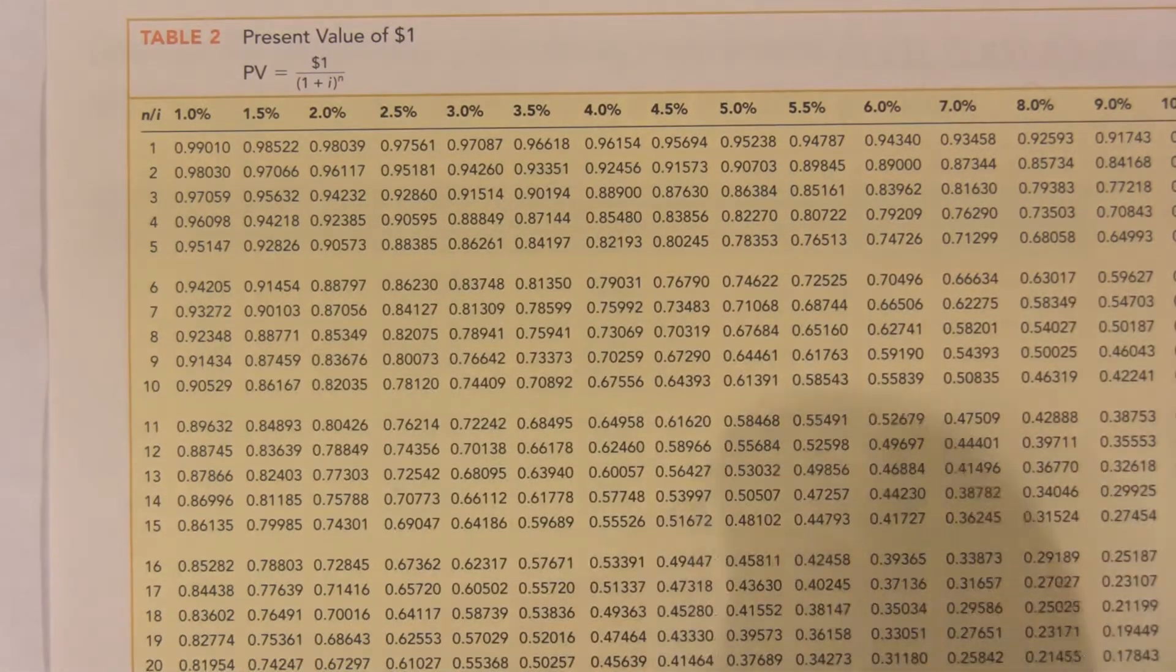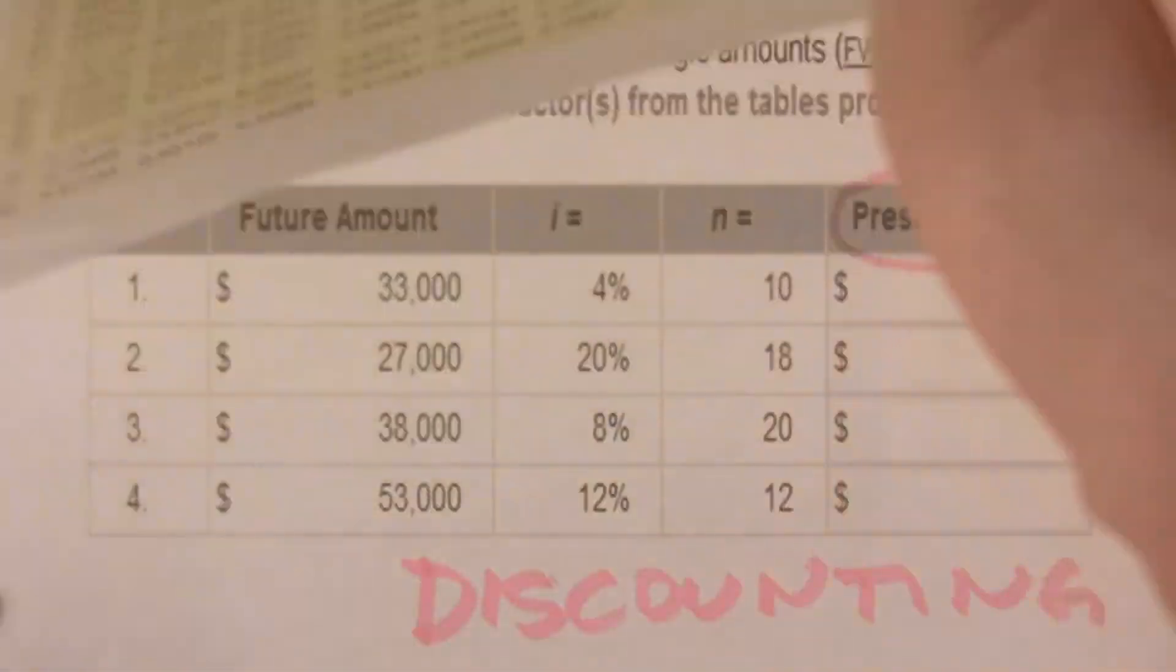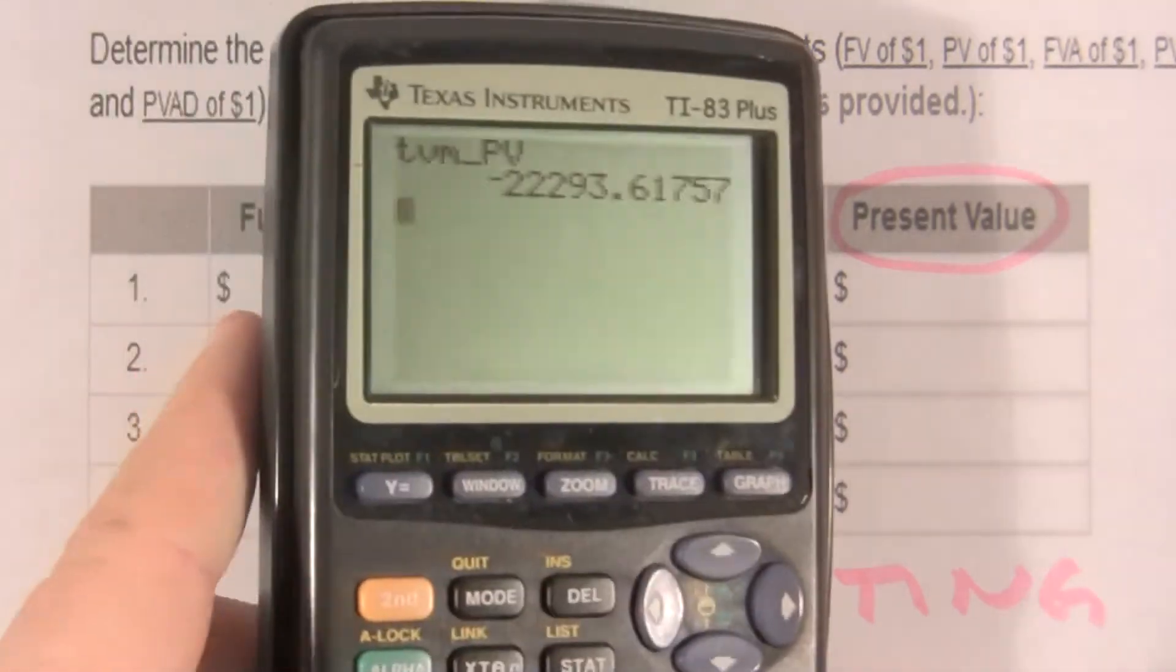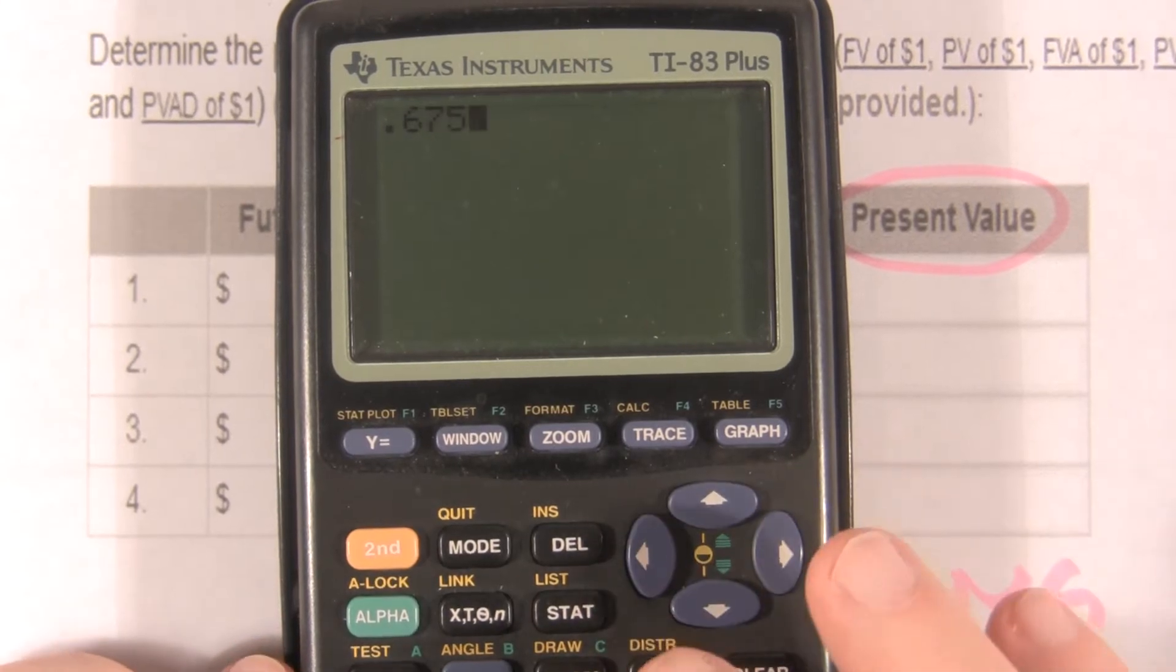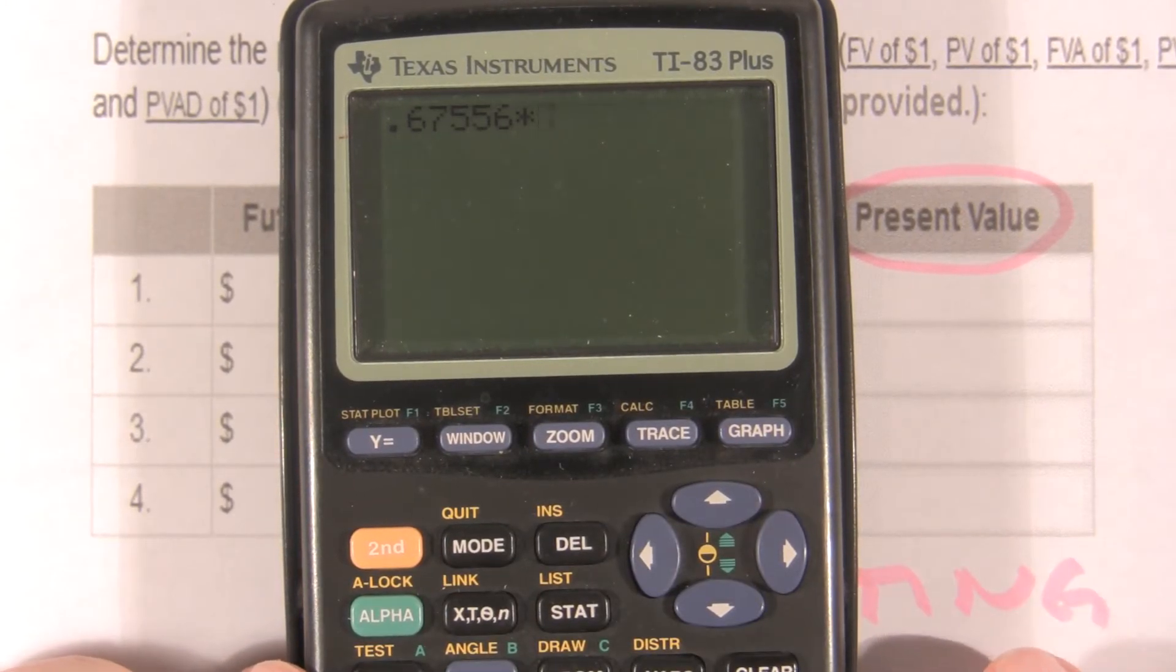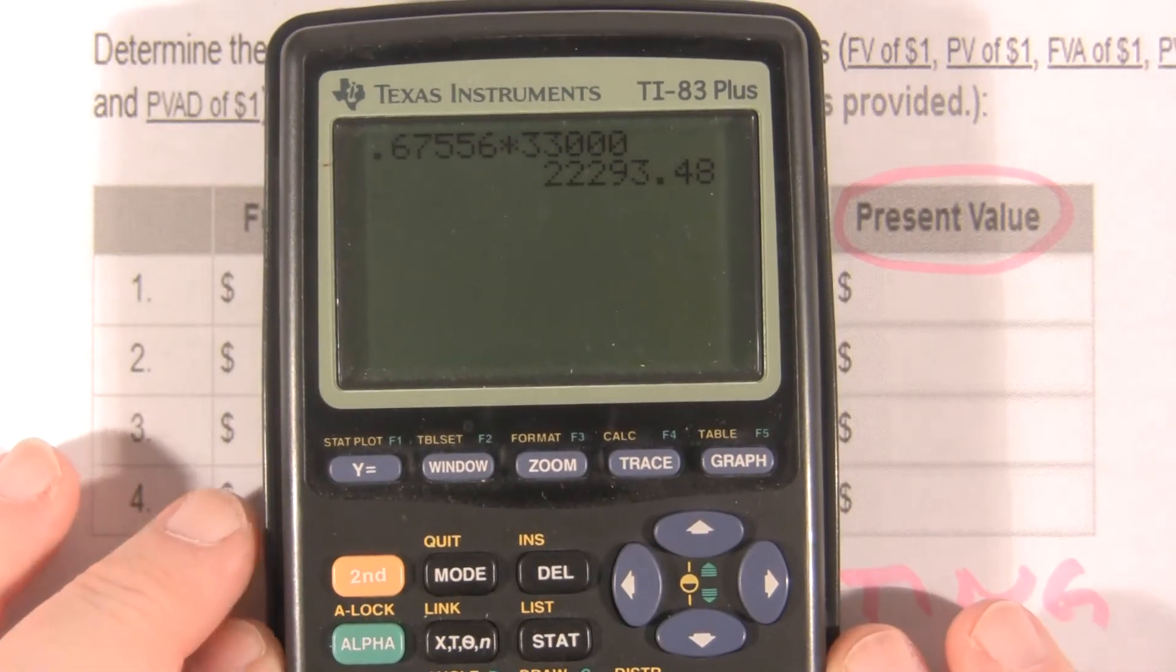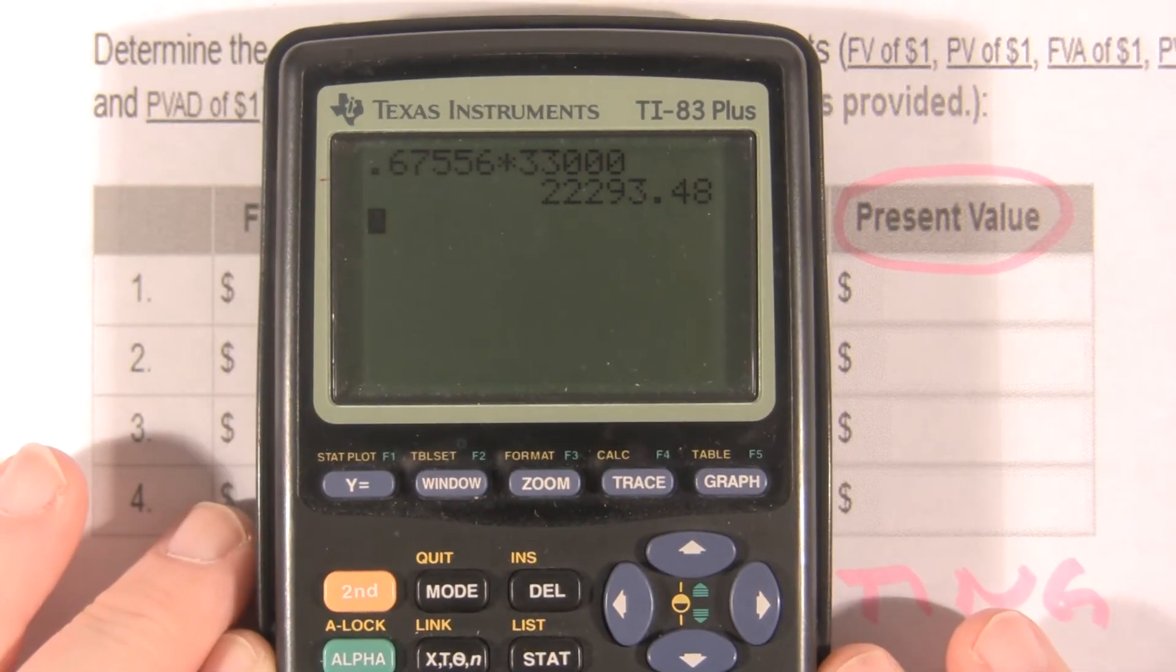So we will simply take 0.67556 times the future amount, 33,000. And it tells us $22,293.48.